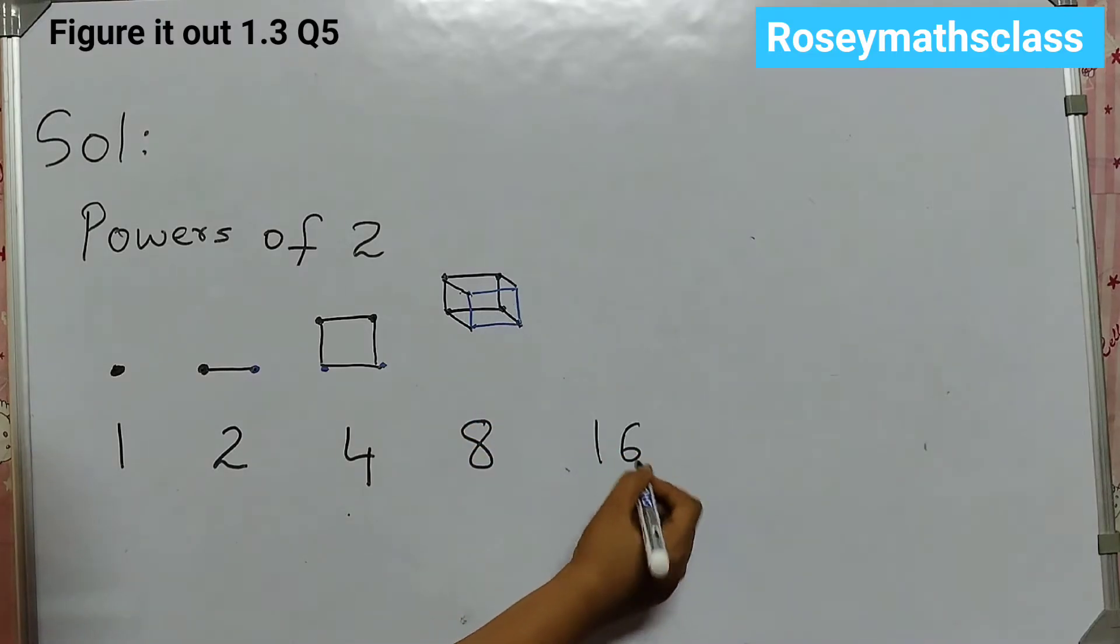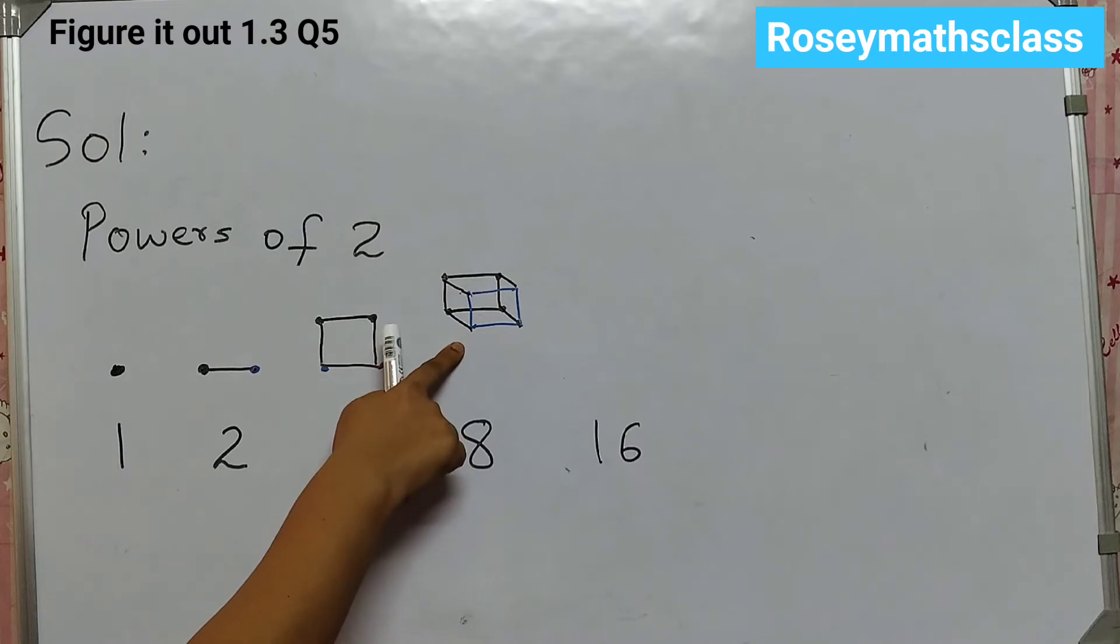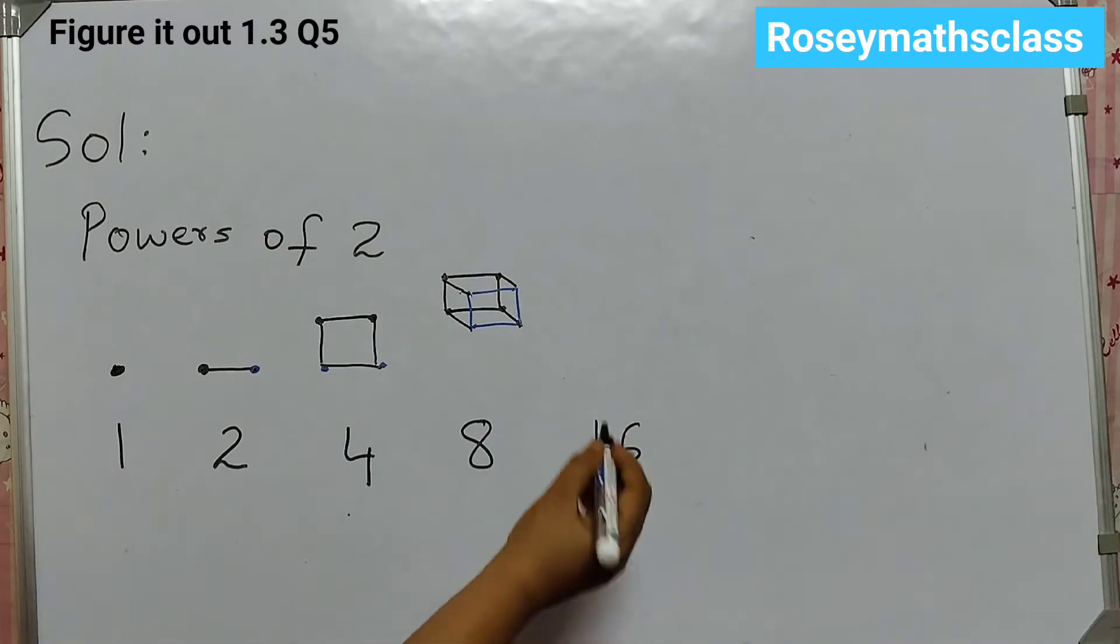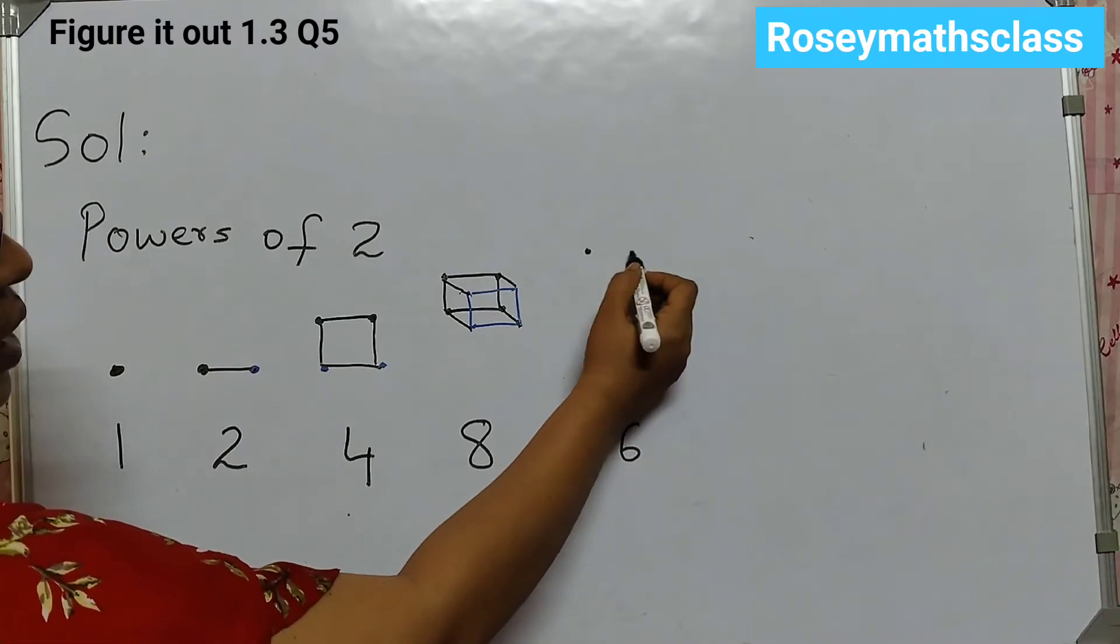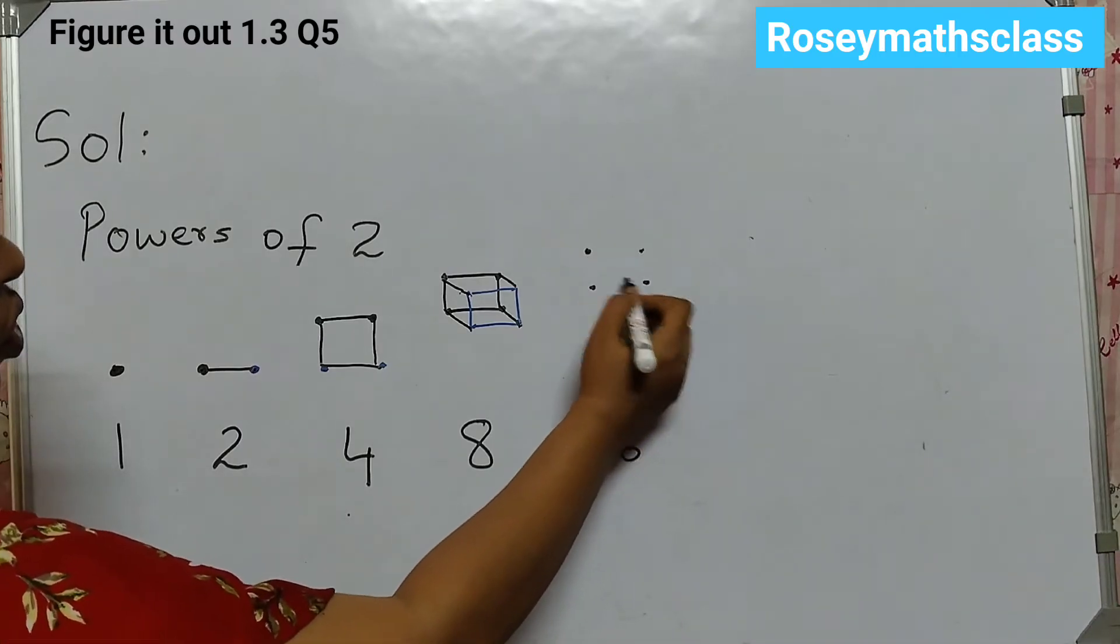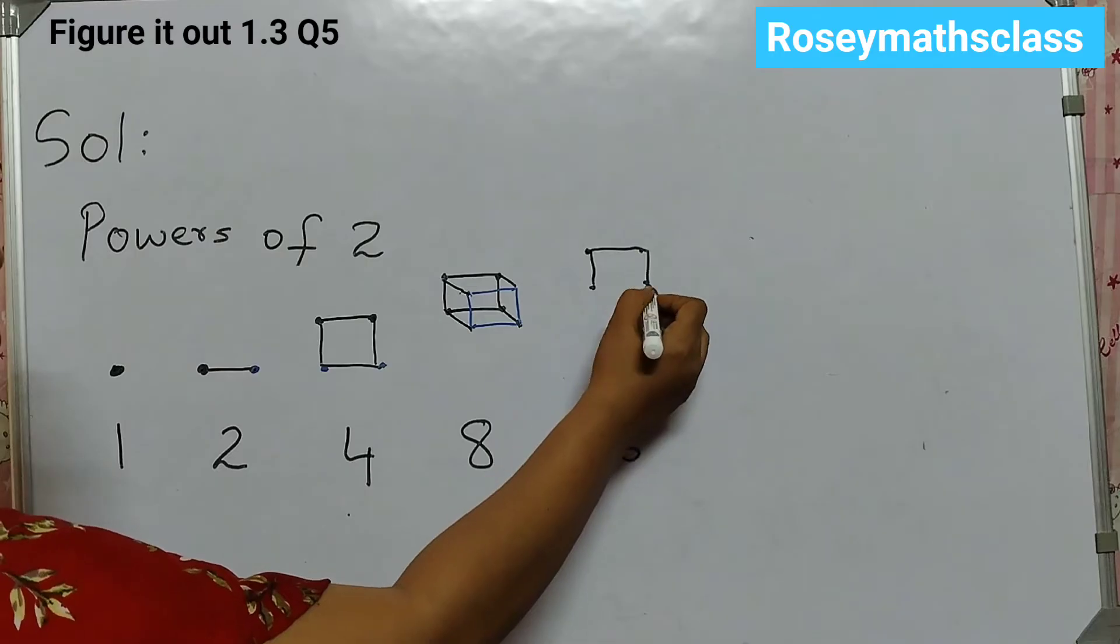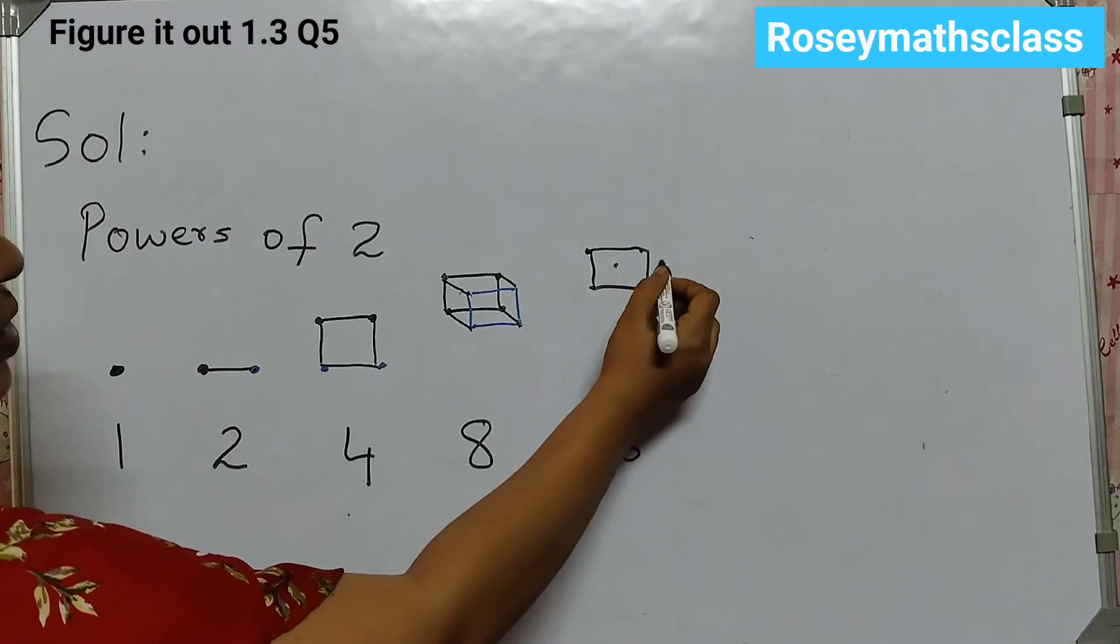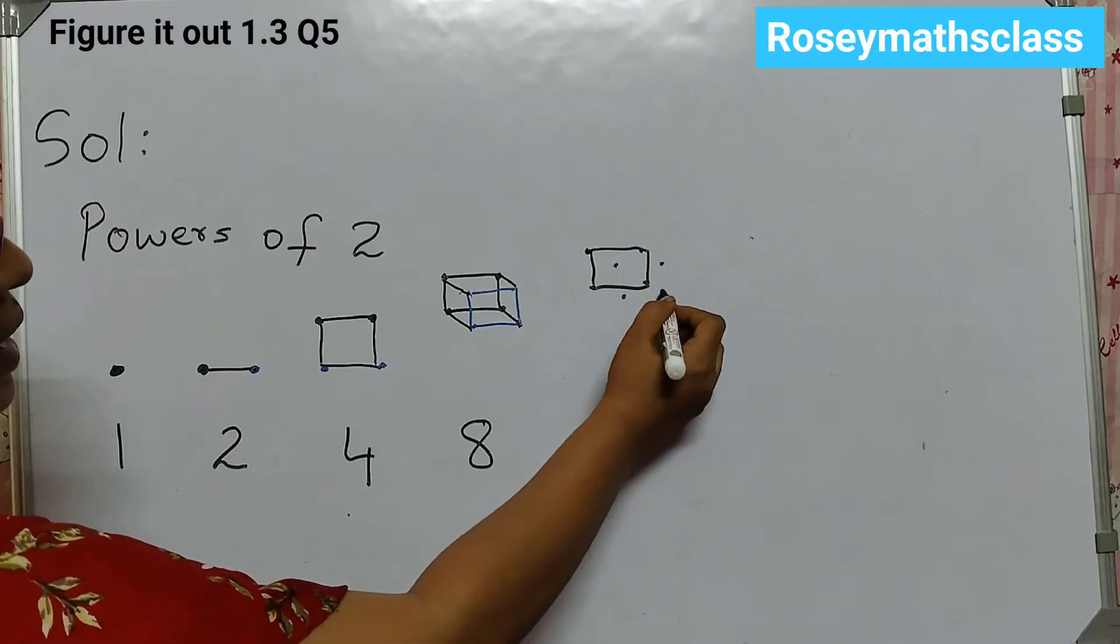Next number is 16. So you draw this first. And then 1 more like this. And then you can just join it. Like 1, 2, 3, 4, 5, 6, 7, 8.